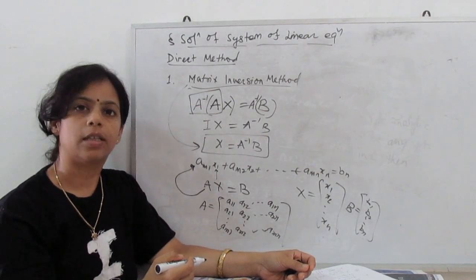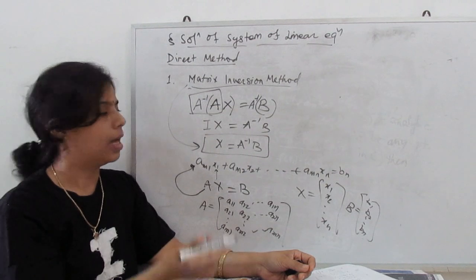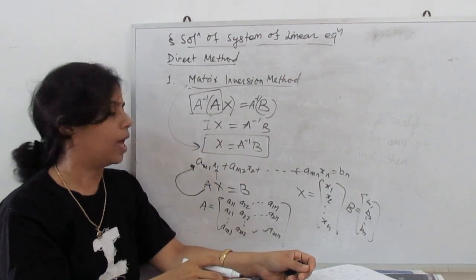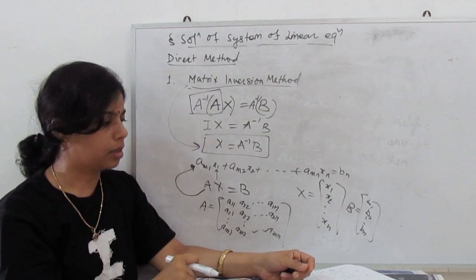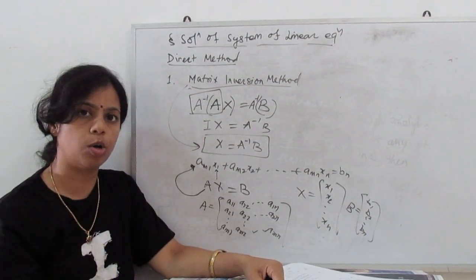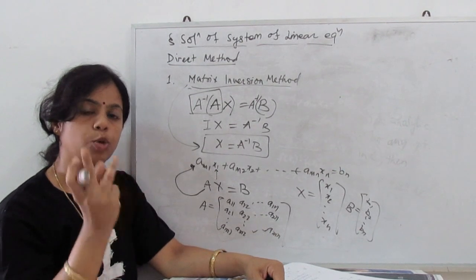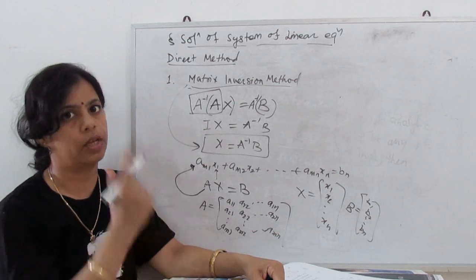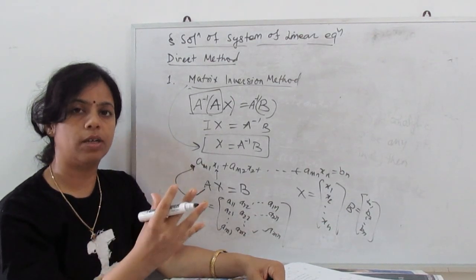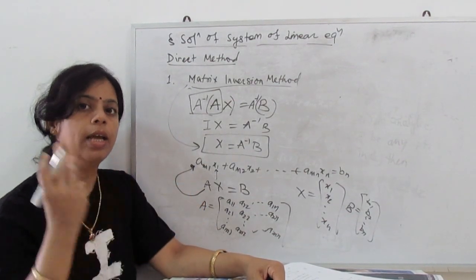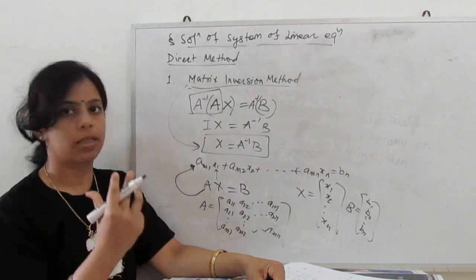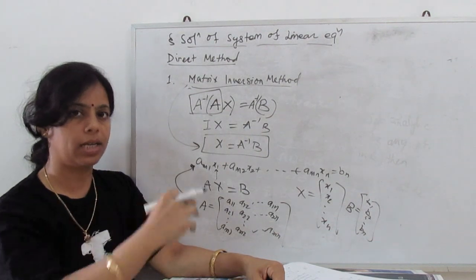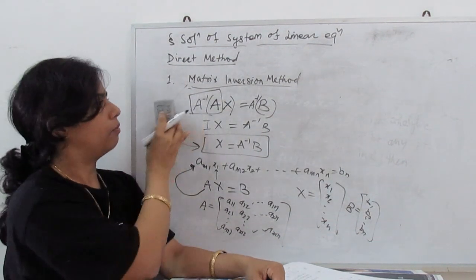First we find the inverse of the given matrix A, then multiply it by B to get the values of all variables. For any inverse matrix, we need two things: the determinant of the given matrix and the adjoint of the given matrix. So A inverse equals adjoint of A divided by determinant of A. I will skip deriving the adjoint and determinant and just solve a simple example.